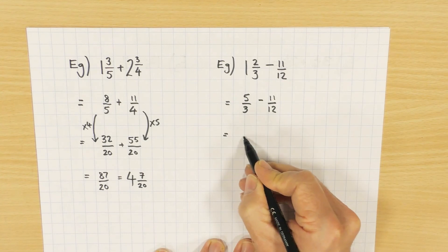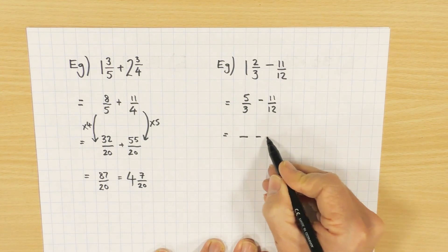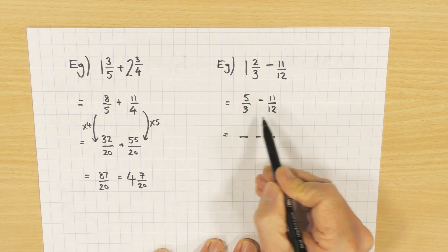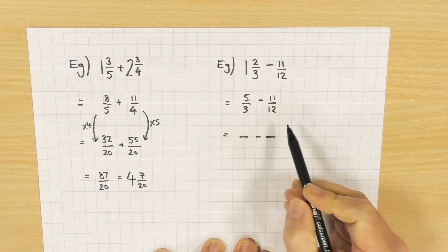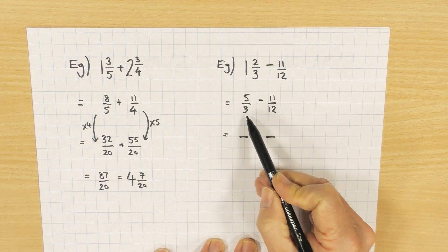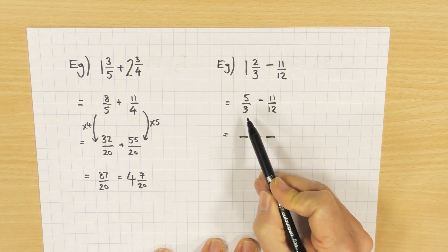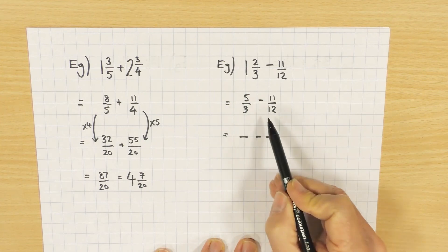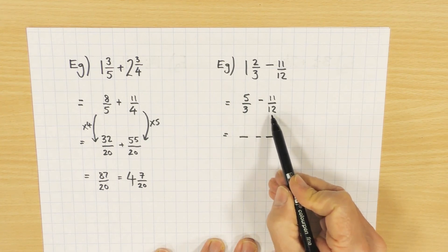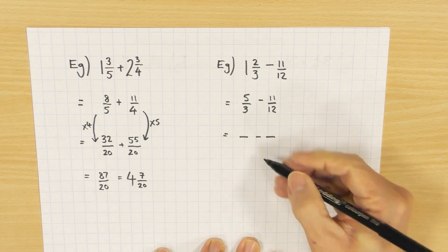I look for a lowest common multiple. Now some people always times to get it. That's okay. Three times 12 is 36 would work, but surely a better one, an easier one, is to see that the lowest common multiple, the first number that occurs in both the 12 times table and the three times table, is just 12.